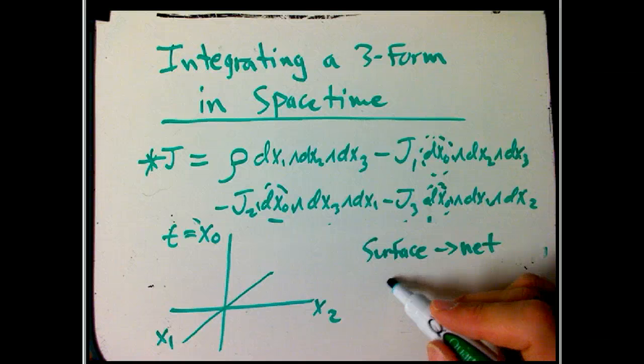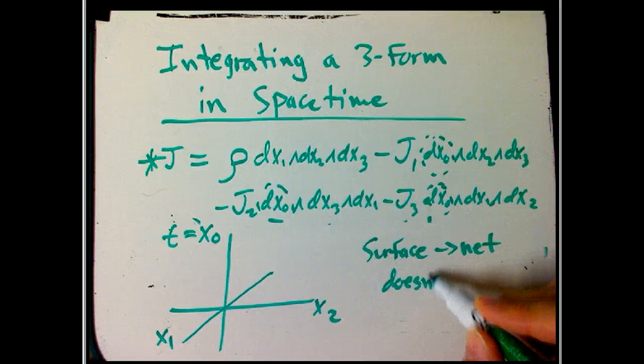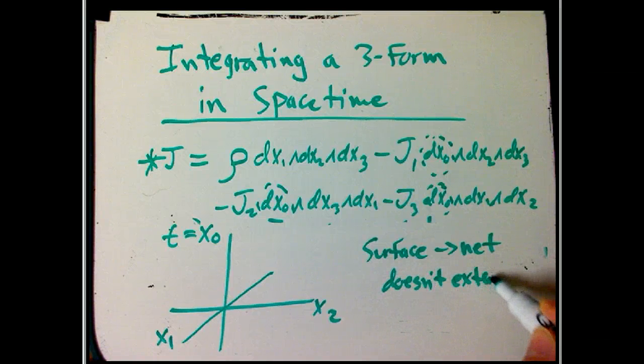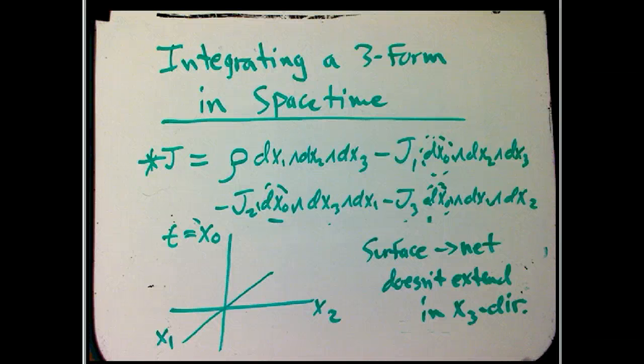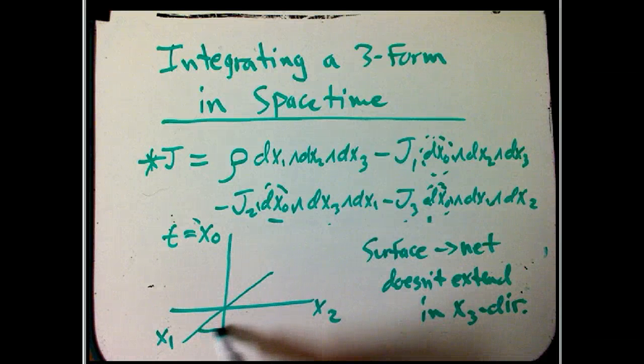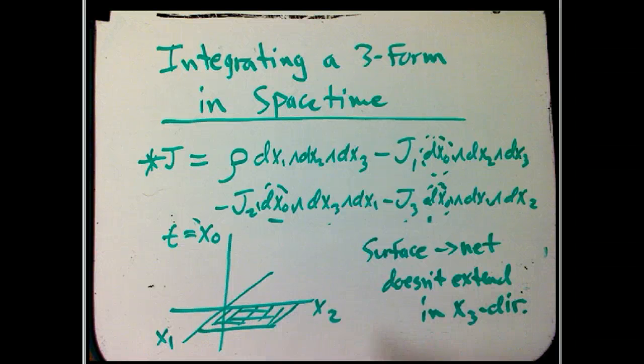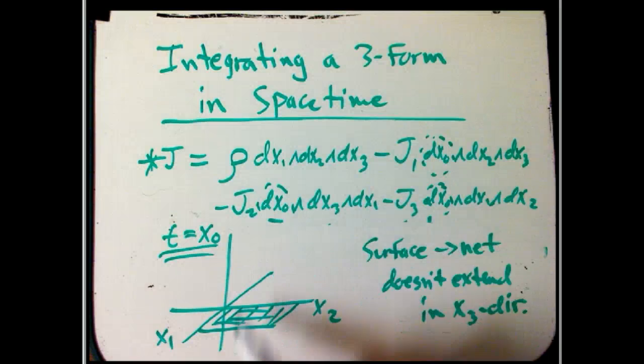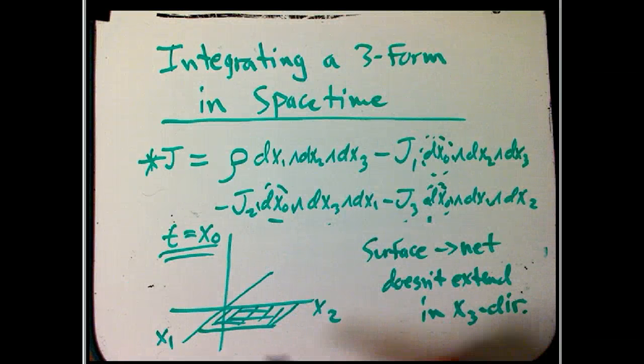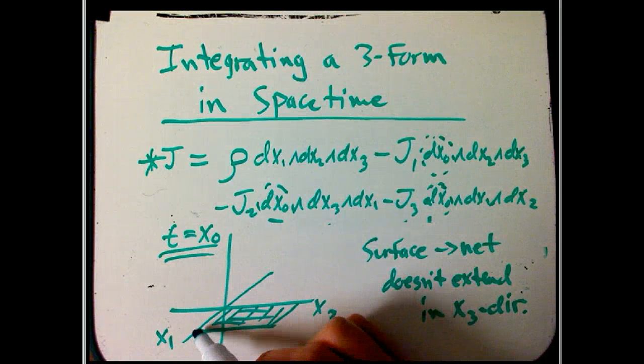Because let's say we're talking about a surface, a physical surface like a net, a stretched taut net, and it happens to not extend at all in the x3 direction. So physically, it's really just something that's in the x1 and x2 directions. There's that net. And then I'm going to put that into a space-time picture by actually letting time be that third direction.